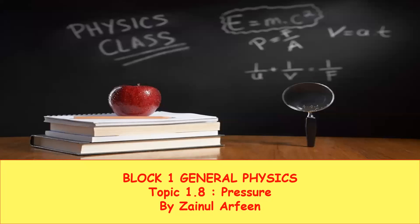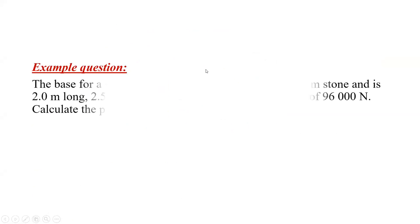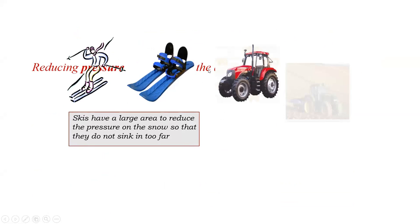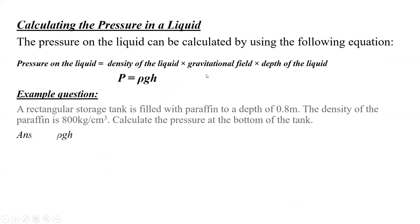This is Block 1 general physics, last topic which is about pressure. We discussed how to calculate pressure — pressure is how much force is acting on a unit area. To increase pressure, apply more force and reduce the surface area. To calculate the pressure exerted by a liquid, since liquid applies pressure in all directions, we multiply density by depth and by gravity to get the pressure exerted by the liquid.